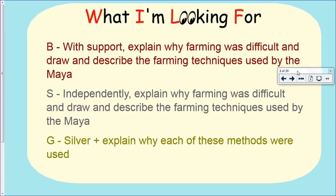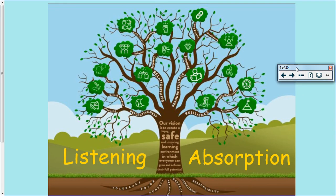Today you're going to be creating another kind of fact file slash information page. Bronze - you're going to do it with some support from someone at home if you need it, to explain why farming was difficult and draw and describe the farming techniques used by the Maya. Silver is exactly the same but independently - hopefully most of you will be achieving at least silver today. Gold is to complete silver but then add a few bits of extra information that I talk about through the slides. Because it's brand new learning, you need to make sure that you're listening really well and watching the screen.